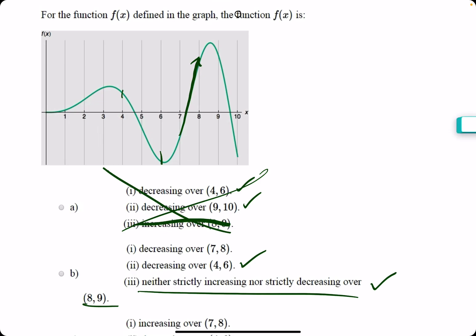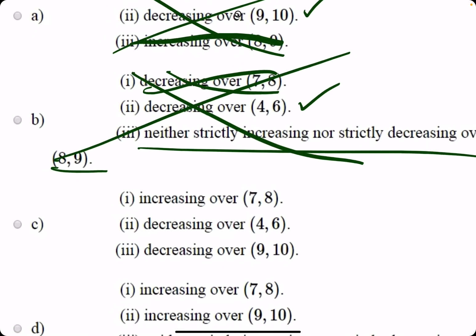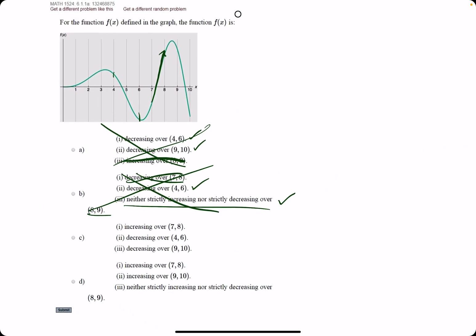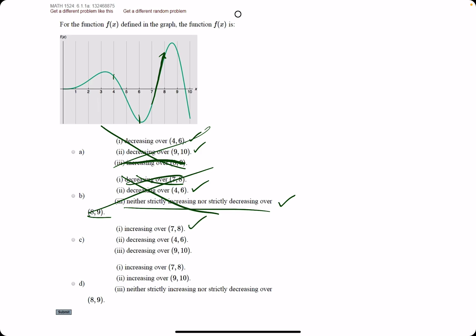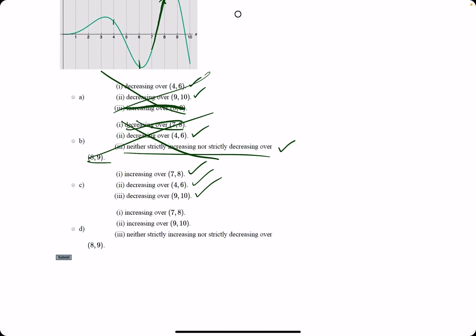So that is also false, making the entire option false. So we move on to c. Increasing over (7, 8)—we just said that was true. Decreasing (4, 6)—also true. Decreasing (9, 10)—we've said all these are true at some point along the way. So c looks solid.